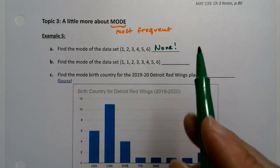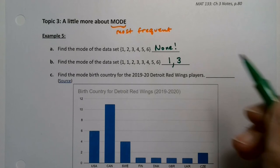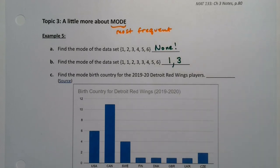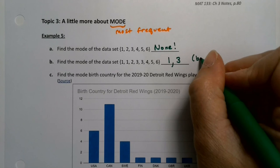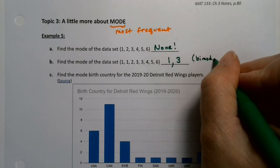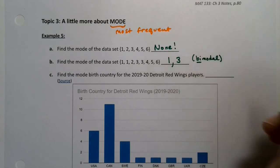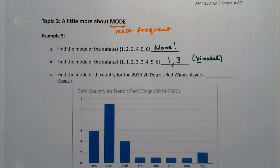So this particular data set has one and three as its mode. So that's something called bimodal. Bi, of course, meaning two. It's the prefix for two. So one and three.